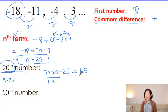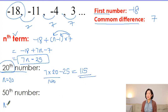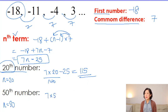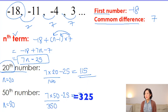For the 50th number, n = 50: substitute 50 into n, giving 7 times 50 = 350, take away 25 is 325. I made a mistake earlier — the correct answer is 325.